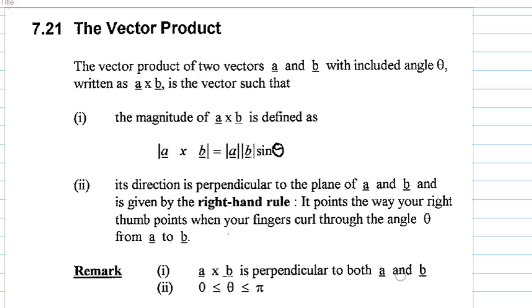This video introduces the geometry of the vector product between two vectors. The vector product of two vectors a and b with included angle theta, written as a cross b, is a vector such that the magnitude of a cross b is